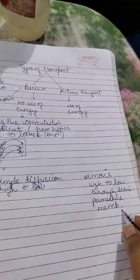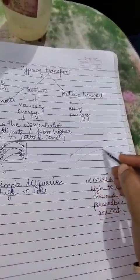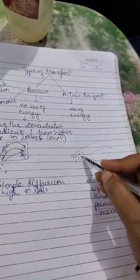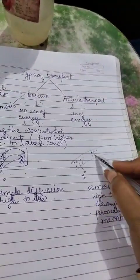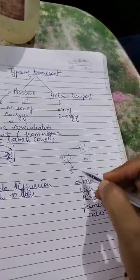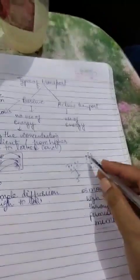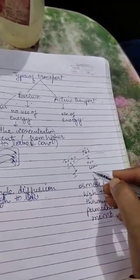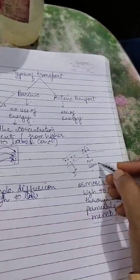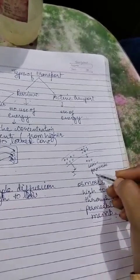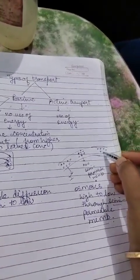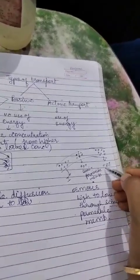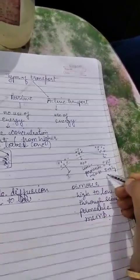What does semi-permeable membrane mean? I am going to explain permeability. This is a membrane. If there are many molecules on one side and no transfer of any molecules occurs, that means it is impermeable. If some molecules transfer — that means there is a selection — it is a semi-permeable or selectively permeable membrane. If all molecules are transferred freely, then it is a freely permeable membrane.